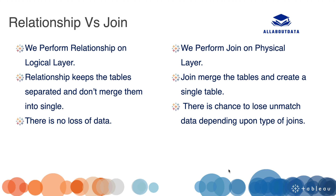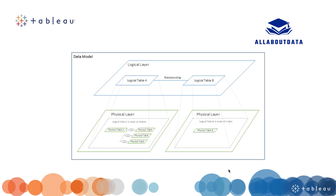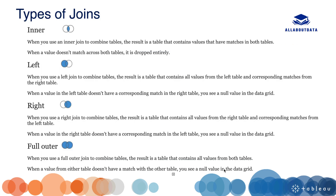The data loss depends upon the type of join you are using — that is inner join, left join, right join, or full join. In the diagram you can see the logical layer and physical layer. The logical table A is connected to logical table B using a relationship. In the physical layer, logical table A is made of four physical tables connected with inner join, and logical table B is made of only one physical table.